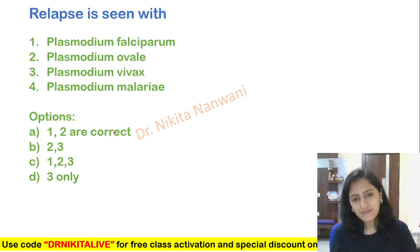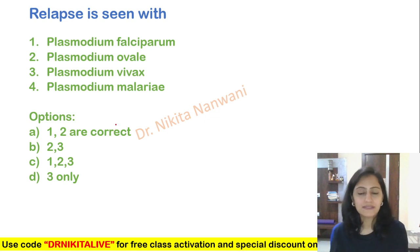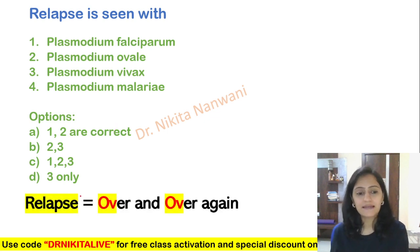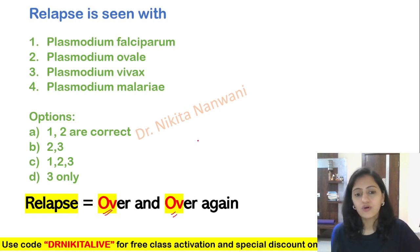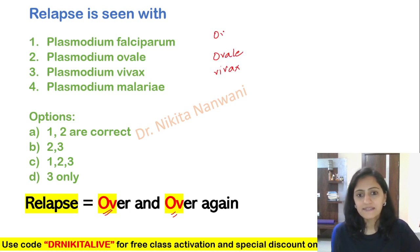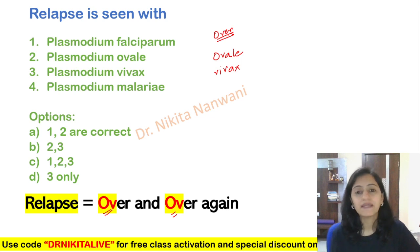The easy trick to remember which plasmodium causes relapse is: remember that relapse means something happening over and over again — that is O and V — which means it is plasmodium ovale and plasmodium vivax, which have relapse happening over and over again.